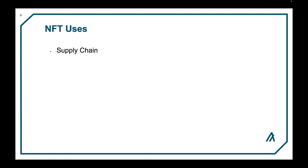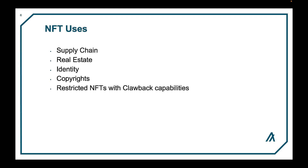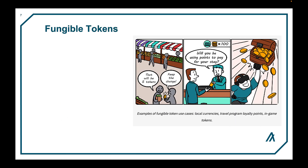NFTs can be used for supply chain changes or checkpoints. Real estate, identity, copyrights, and restricted non-fungible tokens with clawback capabilities can be used for ownership, registries, or regulatory certifications. Fungible tokens, or FTs for short, are a type of asset split into multiple units that are fundamentally the same and interchangeable one-to-one with each other.